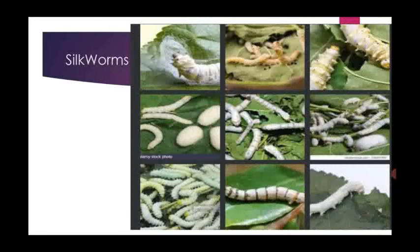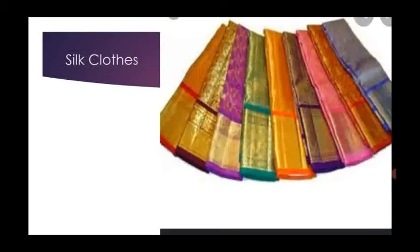Silk is comfortable to wear. Look at this picture — this is a silkworm cocoon. Using silk, we can make different types of clothes. For example, silk saris. Look at this picture — these are the silk saris.